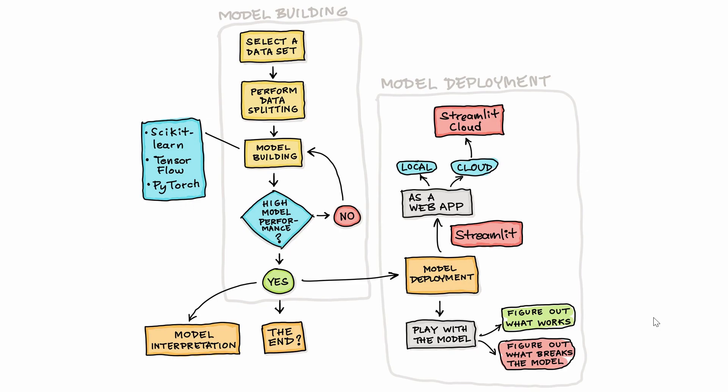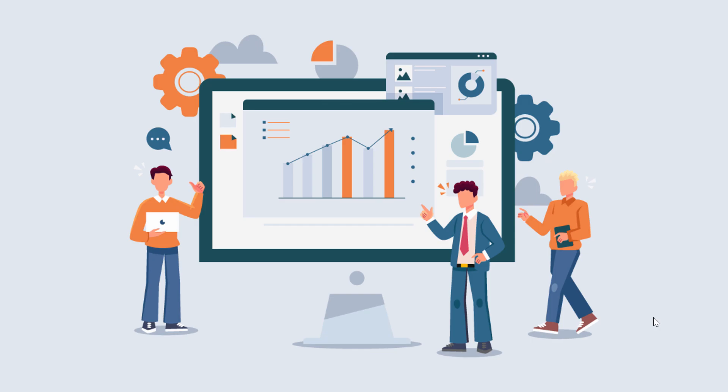They want to create the best models for their team, but if it takes days to turn a model into a web app, they won't do this until they're nearly finished the modeling process. It would be better to involve stakeholders early and often, so models can be built that people actually need.